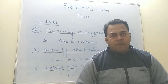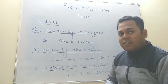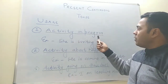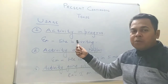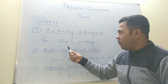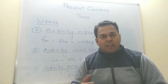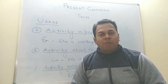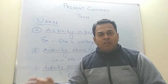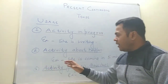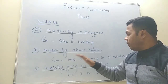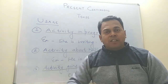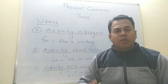We can use present continuous tense in three phases. First, activity which is in progress at present point of time — like 'she is writing,' 'they are reading,' 'he is teaching,' 'she is cooking.' Second is activity about to happen, like 'he is coming in five minutes,' 'they are visiting the area in ten minutes.'